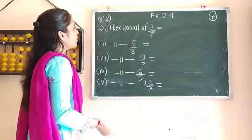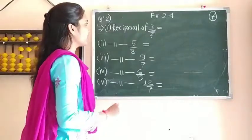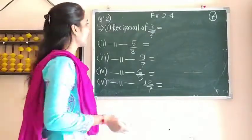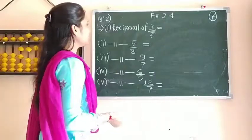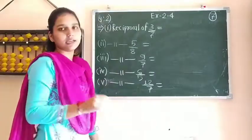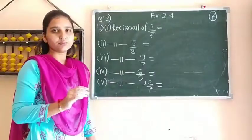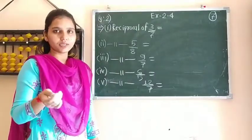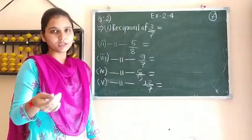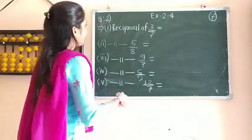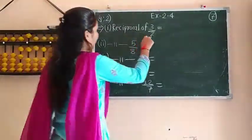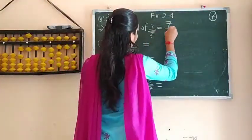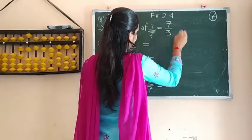You know the concept of reciprocal that we have studied before. To write the reciprocal, the numerator becomes the denominator and the denominator becomes the numerator. So the reciprocal of 3 by 7 is 7 upon 3.